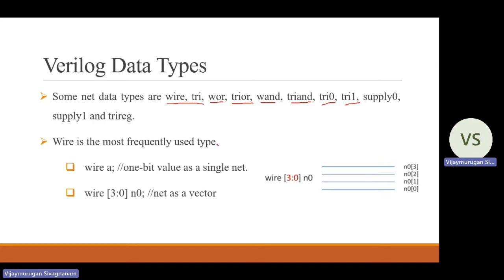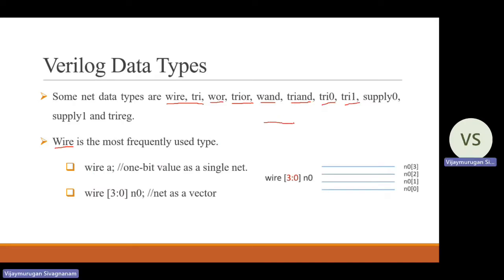Wire is the most frequently used net type. Among all these types, wire is the most used data type in Verilog HDL. Wire is nothing but just carrying the data — a single data line. If you need to transfer a single bit of data, you can use wire. For example, a value of 0 is transferred through this single line, and it is called a wire.